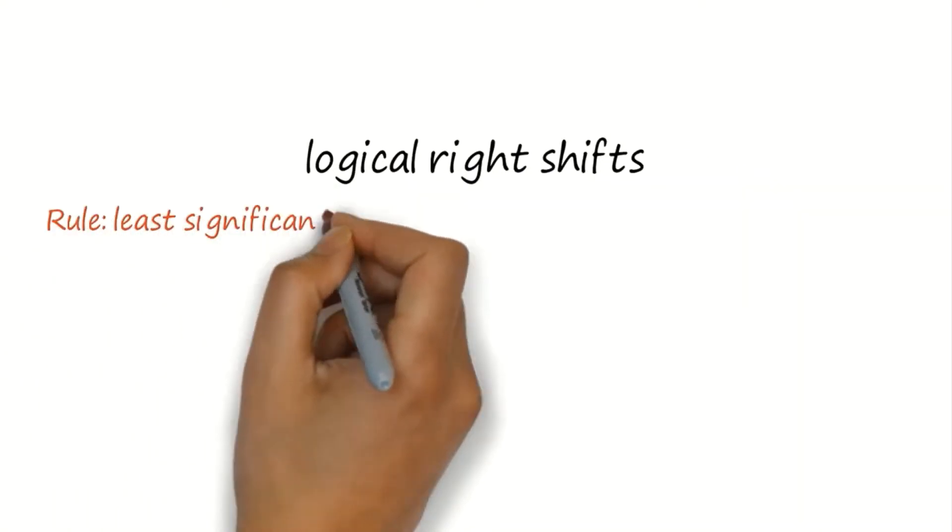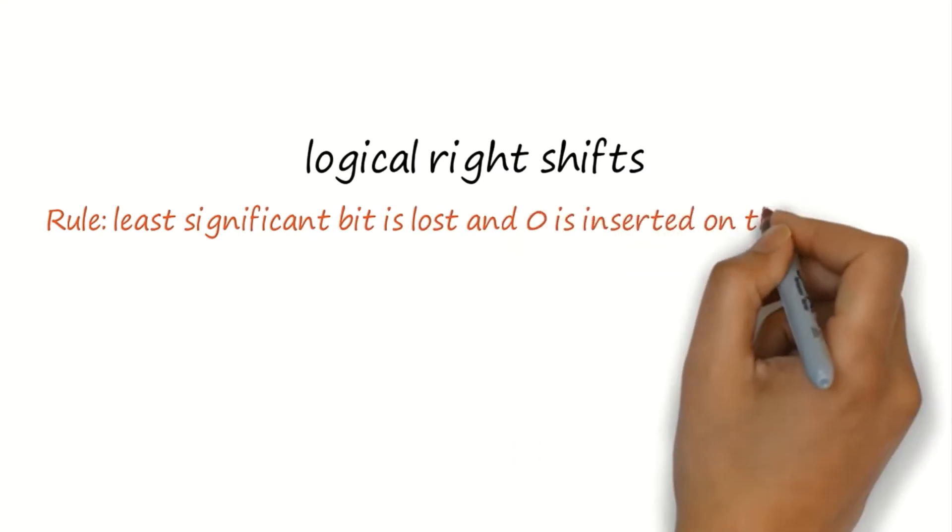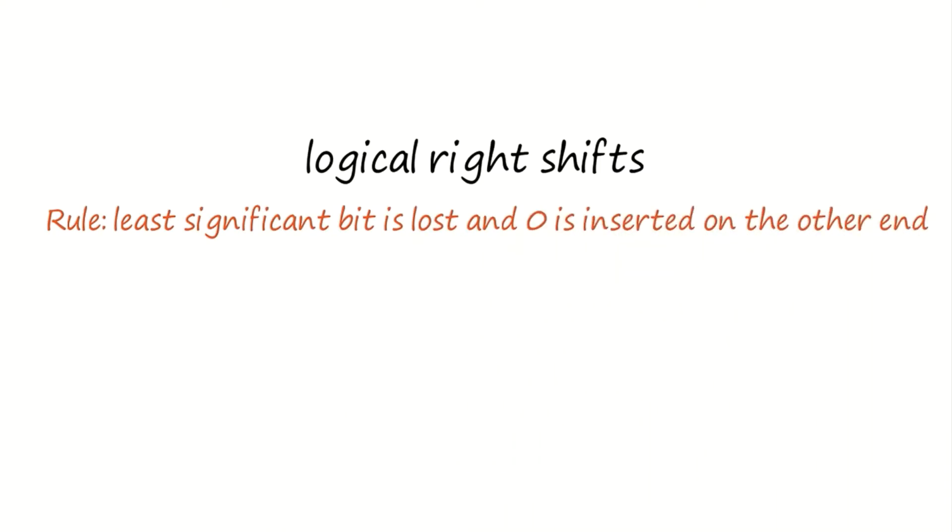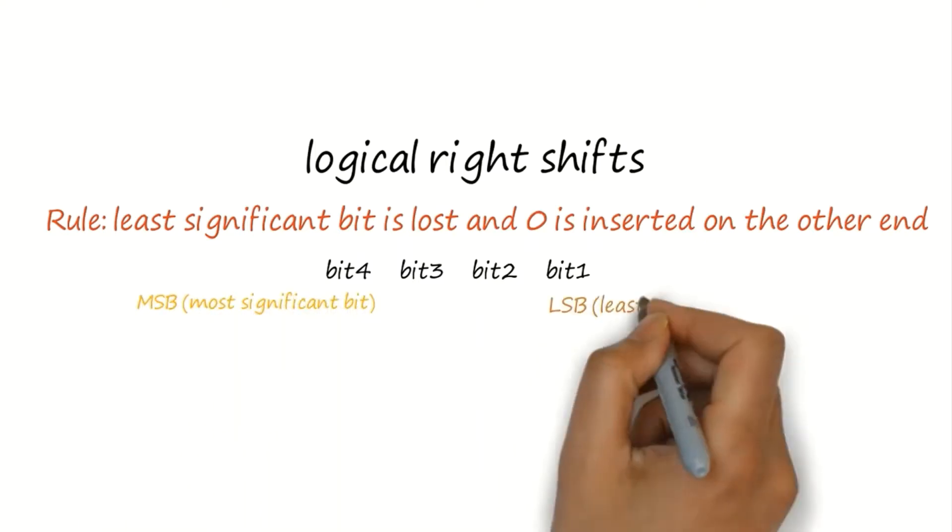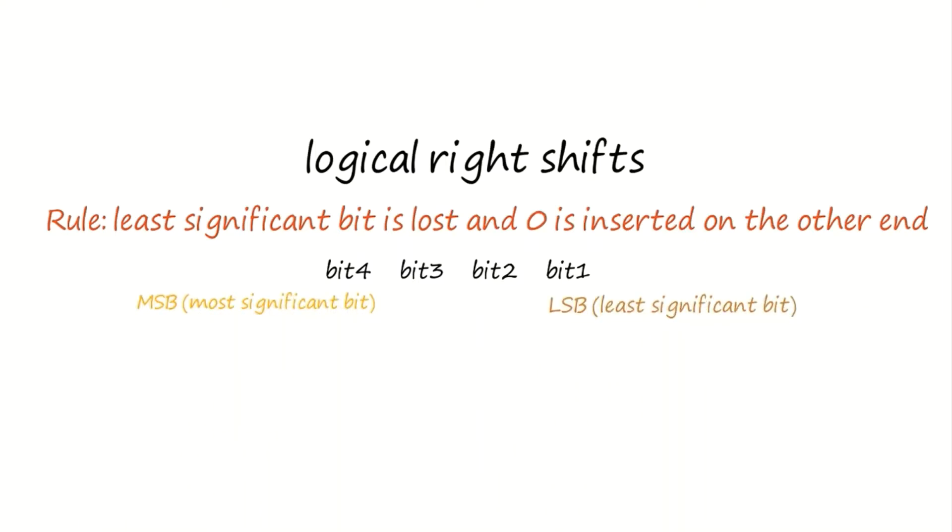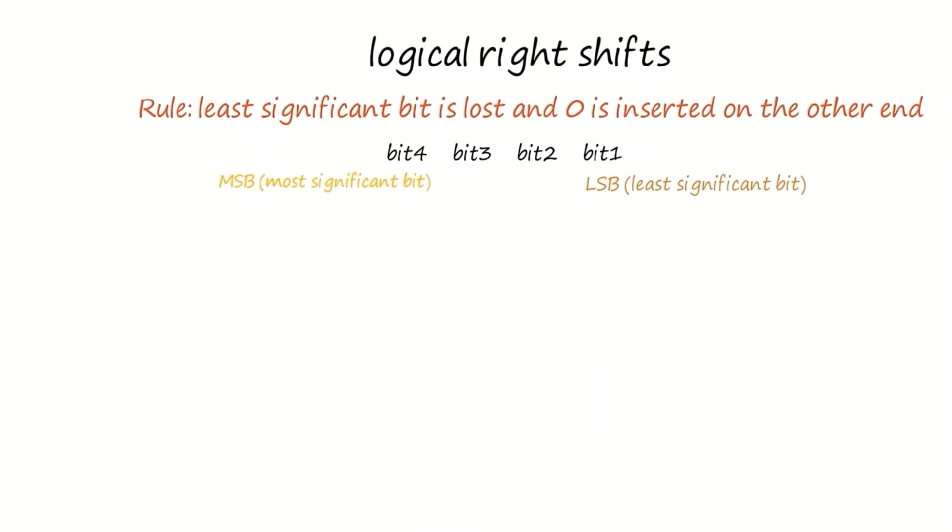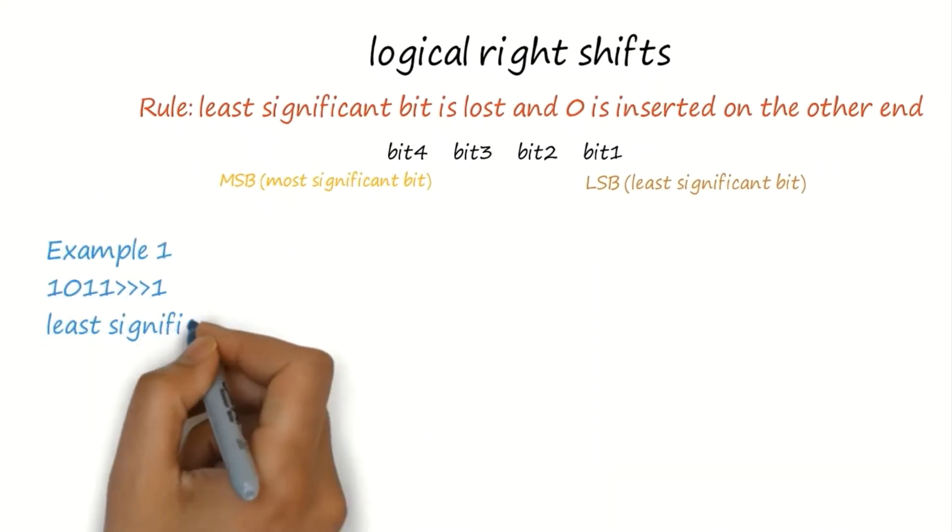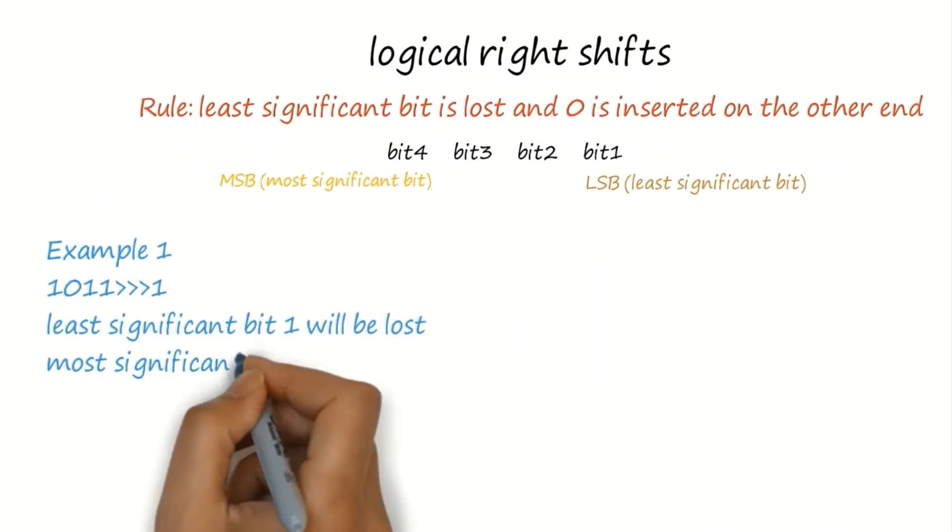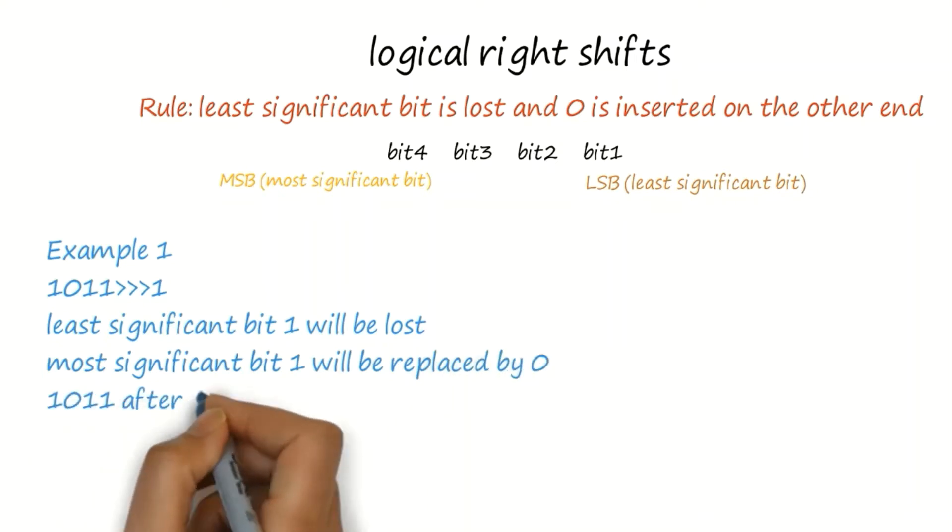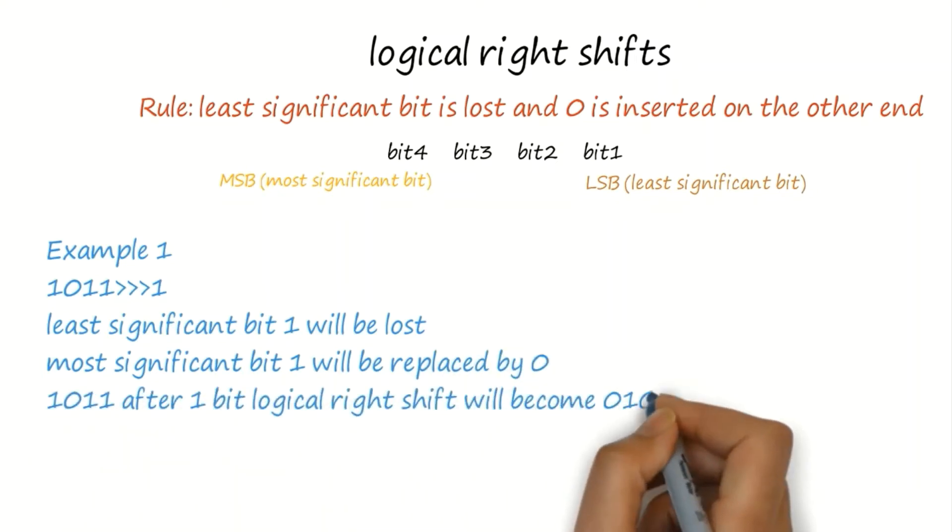Let's understand logical right shift. When logical right shift occurs, the least significant bit is lost and a 0 is inserted on the other end. To perform 1-bit right shift on 1011, the LSB will be lost and the MSB 1 will be replaced by 0, becoming 0101.